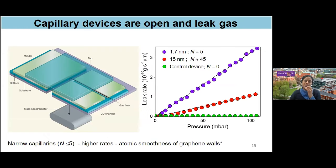The first test after making the devices is to check whether these angstrom-scale capillaries are even open. We do a simple gas leak test: take a device with a single capillary and let gas through and test the gas flow. What we see is they do leak gas, whereas samples without the channel — where the spacer has no opening — show no leak. This is definite proof that the device configuration is leak-tight, and that angstrom channels, when present, do conduct.